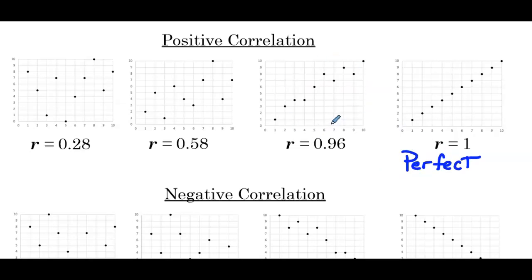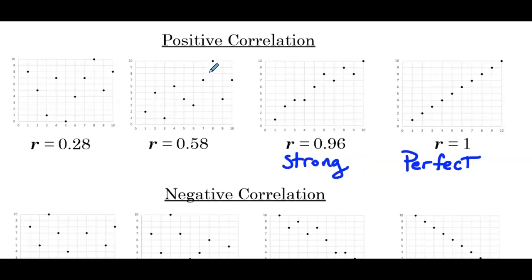Moving one to the left, the data is linear — there's a strong linear relationship, but it's not perfect. The correlation coefficient is 0.96, so we'll describe this as strong positive correlation. The next scatter plot is starting to get a little more spread out. If we drew the line of best fit, we'd have to estimate it based on the data. The correlation coefficient is 0.58, so it's definitely not as strong, but it's not weak either — it's kind of in the middle. We'll call this moderate positive correlation.